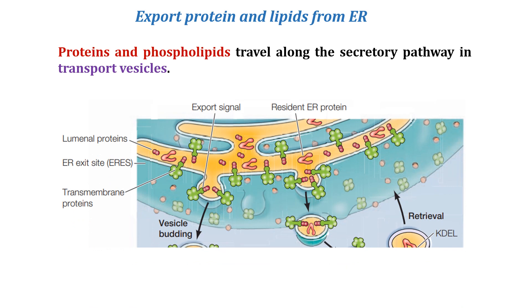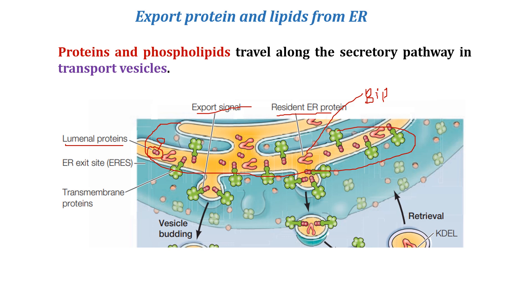Here you can see in this figure the ER structure. Ribosomes on the rough endoplasmic reticulum synthesize polypeptide chains and insert them into the ER lumen — these are the newly synthesized luminal proteins. The resident ER proteins include BIP and disulfide isomerase. Also shown here are transmembrane proteins and their export signals, which luminal proteins bind to for export.